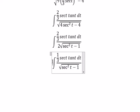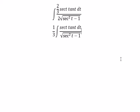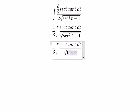We put 1 over 3 here. Sec t squared minus 1, we can put tan t squared.